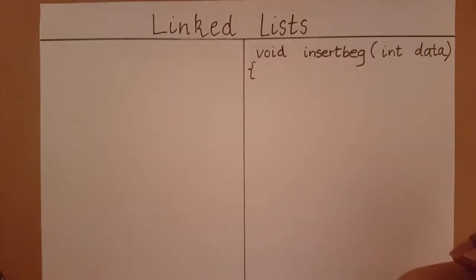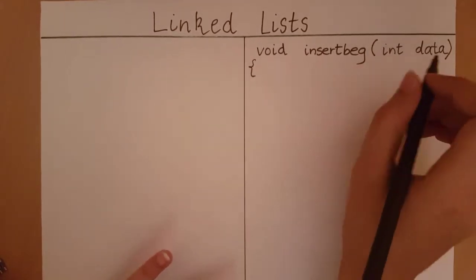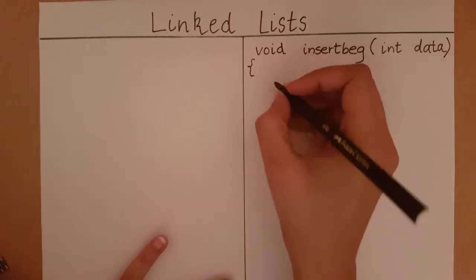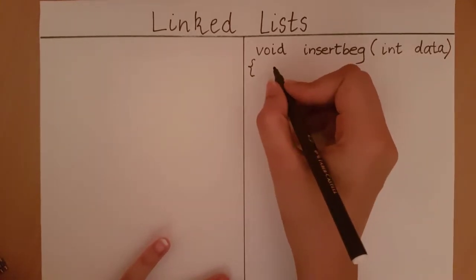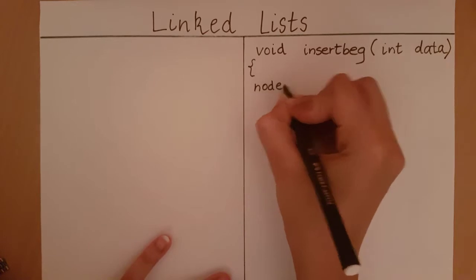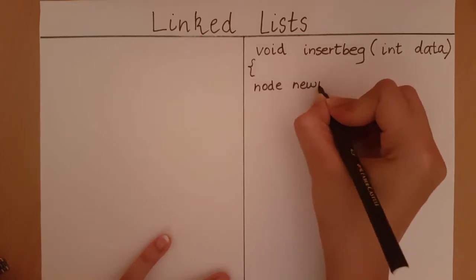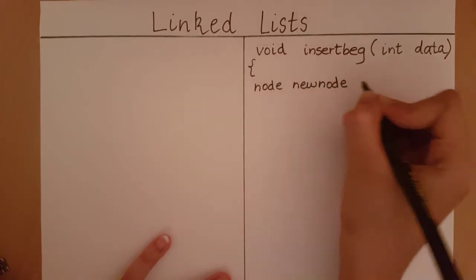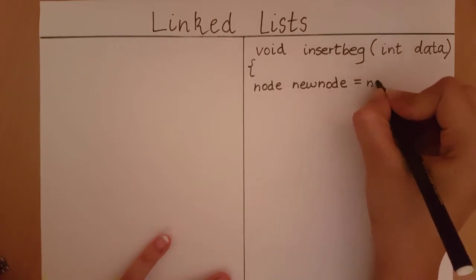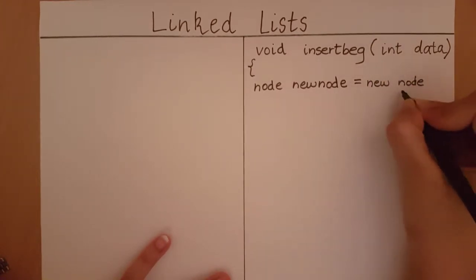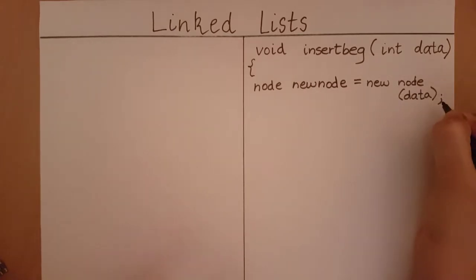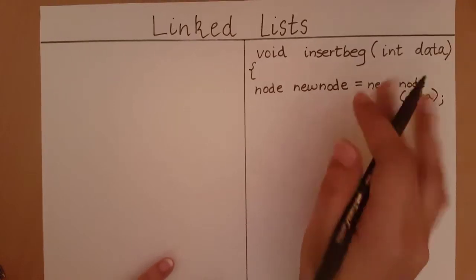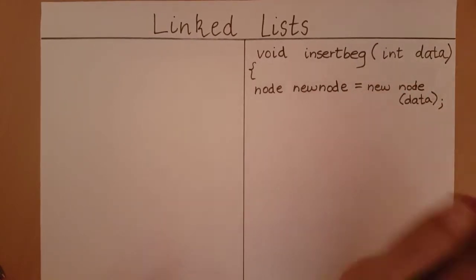Now the first thing we must do in any insert operation is we must define a node which stores this data. So I'm going to call that node new node. So now the object new node is going to store the data I want to add to the linked list.